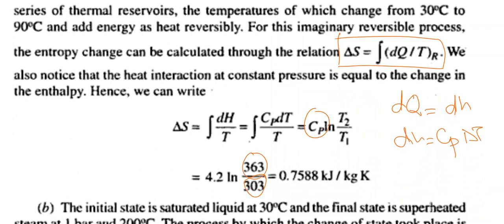Substituting cp = 4.2 kJ/kg·K along with the initial temperature of 30°C and final temperature of 90°C, the change in entropy is equal to 0.75 kJ/kg·K.